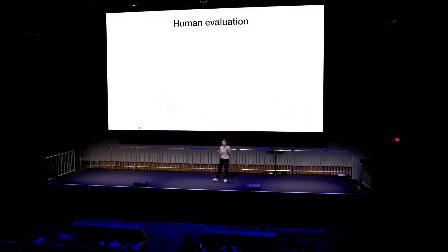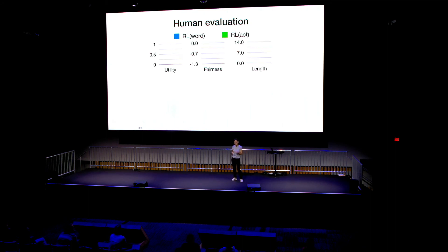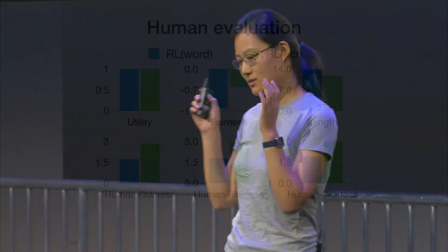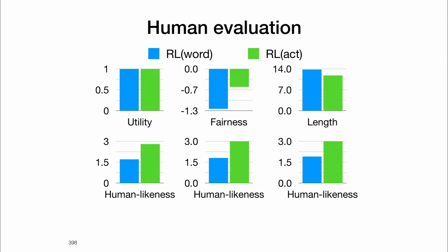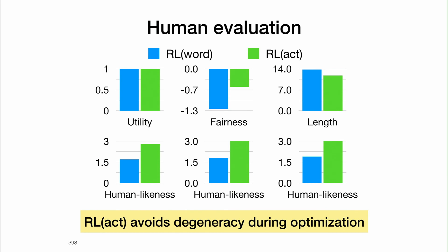For human evaluation, we deployed the bot on Amazon Mechanical Turk and had Turkers talk with it in an A-B testing setting. We compared reinforcement learning in the word space versus reinforcement learning in the action space, using three reward functions: utility, fairness, and dialog length. In terms of optimizing the objective, both models did pretty well. But when asking users whether the bot showed reasonable negotiation behavior or human-likeness, models optimized in the word space had really low scores, while models optimized in the action space maintained the naturalness of the utterance.